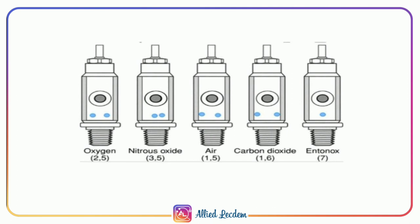The pin index values are: oxygen — 2,5; nitrous oxide — 3,5; air — 1,5; carbon dioxide — 1,6; and Entonox — only one pin, which is 7. A mnemonic to remember: oxygen's formula O2 has a 2, so pin index is 2,5. Nitrous oxide is N2O, so N2 plus O1 gives 3, hence pin index 3,5. Air has no molecular formula, so it is assigned 1, giving pin index 1,5. The second number in the pin index is 5 for all three of these gases.